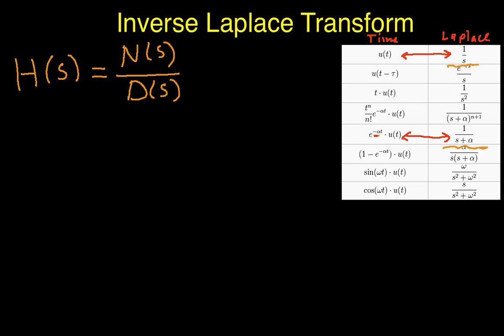The idea is to do those manipulations. Once we find something that's a 1 over s, then the inverse transform is easy. I know that that chunk is going to end up having an inverse transform component of u of t. Or if I find a 1 over s plus alpha, I know that the inverse transform is going to look like this.